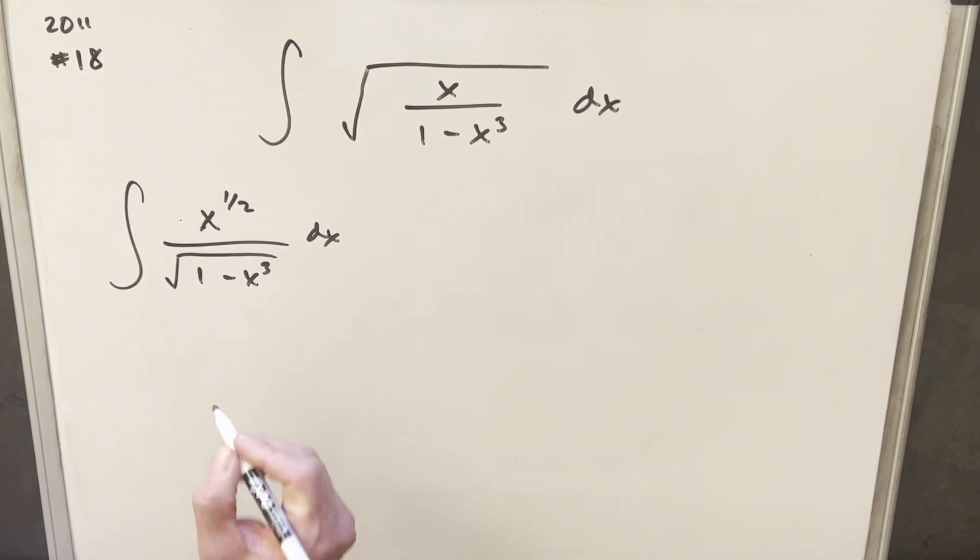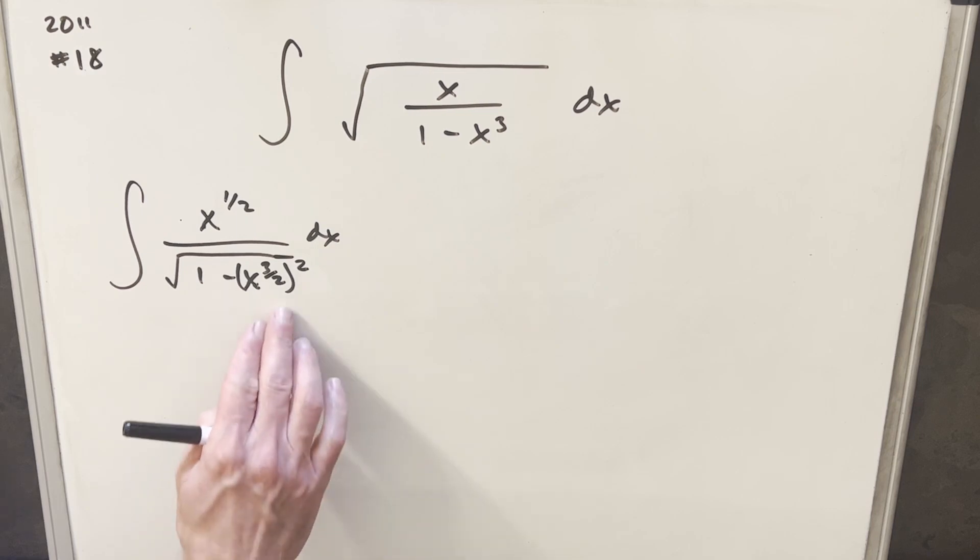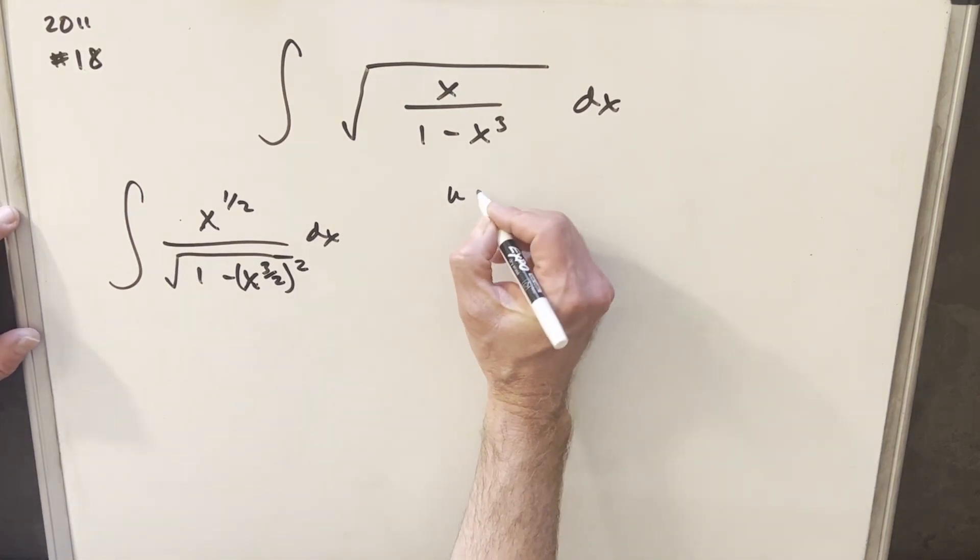So what I'm going to do instead, if I just call this x to the three-halves squared, notice we haven't changed it, that's still x cubed. If we do our u substitution now for x three-halves, it looks like we're setting it up for trig substitution or an easy integral. So let's see how that's going to go if I do that for my u substitution.